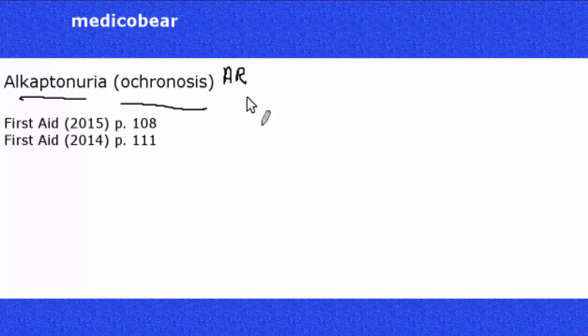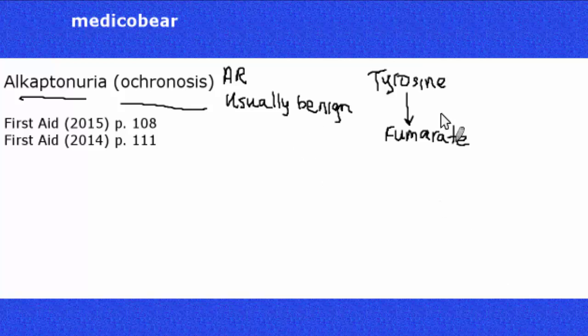Alcaptonuria, also sometimes called ochronosis, is a very uncommon disease, but definitely testable on boards and on exams. Alcaptonuria is an autosomal recessive disease. It's usually benign and it has to do with a problem in the degradative pathway of tyrosine to fumarate.